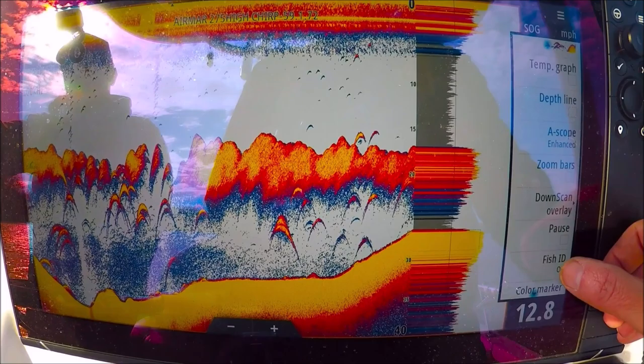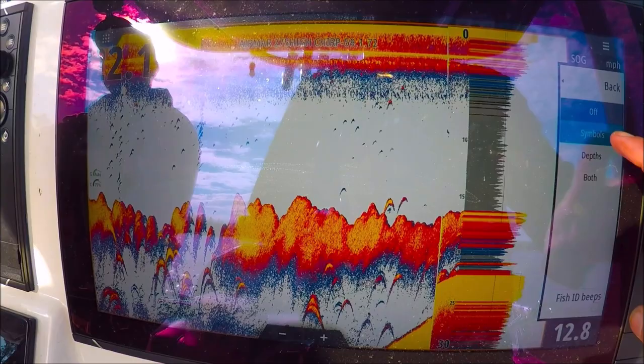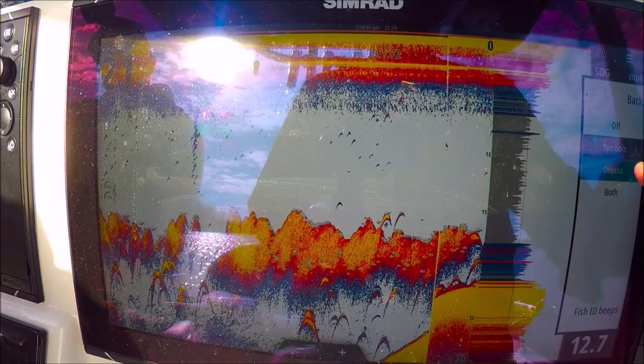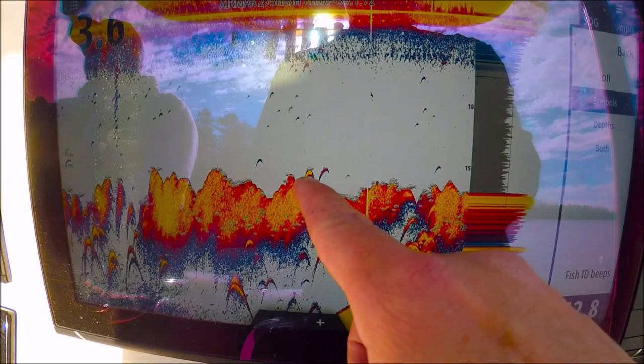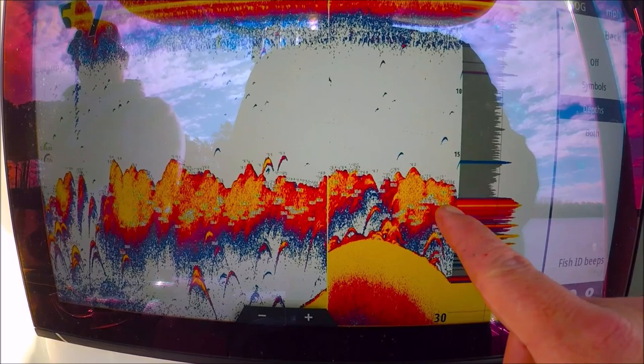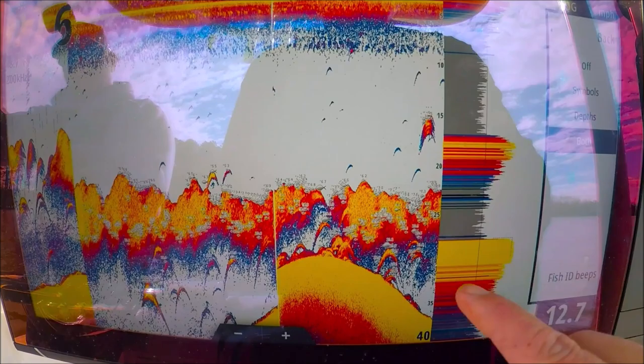Fish ID off. Symbols. Little fish symbols. You don't need that. Depths. This puts a depth number at each mark. The symbols show the little fish here. Symbols, but you don't need that really. Depths. You can see each return will have a number for the depth. Both is the fish symbols and the numbers. Let's turn that back off.